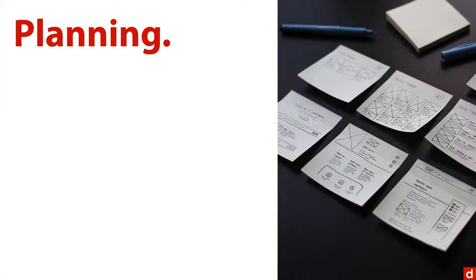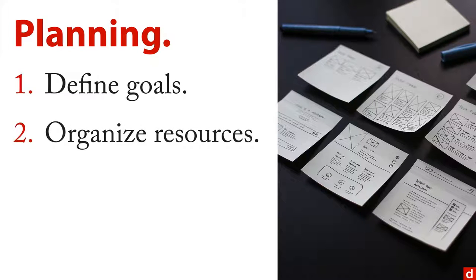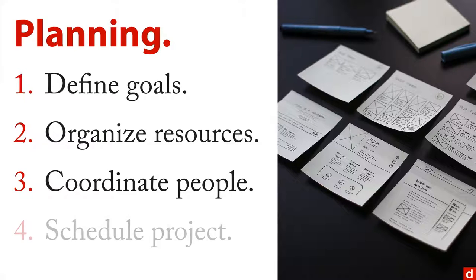First, let's talk about planning. The first thing you need to do is define the goals of your project, so you know how to use your resources well and also so you know when you're done. Second, you need to organize your resources — you might have data from several different sources, different software packages, different people. Third, you need to coordinate the people so they can work together productively, with clear handoffs. And then you need to schedule the project so things can move along smoothly and you can finish in a reasonable amount of time.